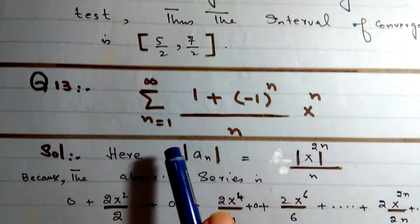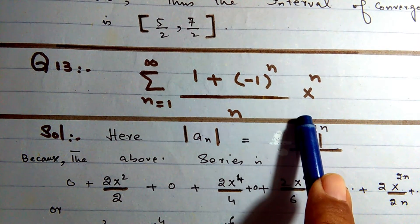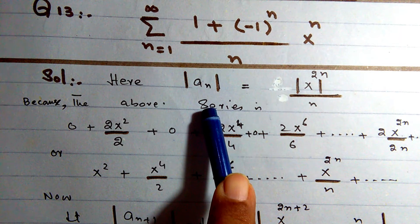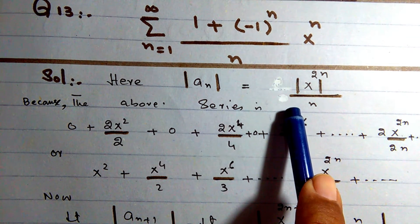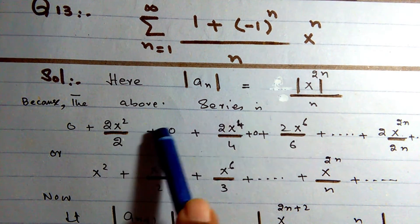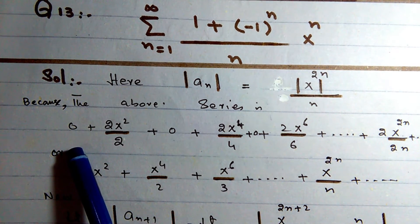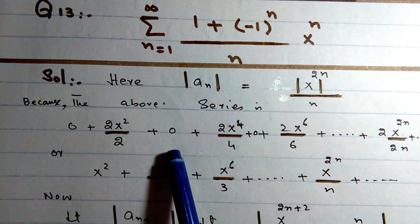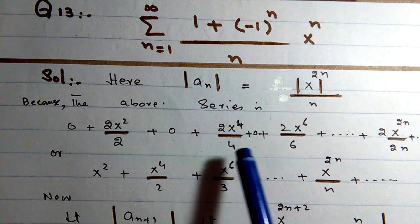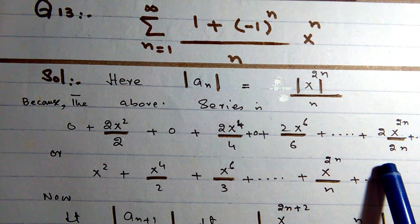Question 13: Summation (1 + (-1)^n / n) · x^n. The absolute value of a_n is x^(2n)/n. Examining the pattern by substituting n = 1, 2, 3, ... we see the series has terms x², x⁴/2, x⁶/3, ..., x^(2n)/n.